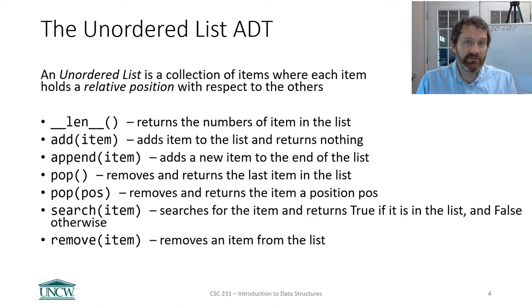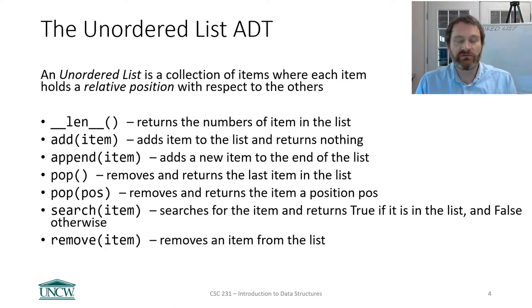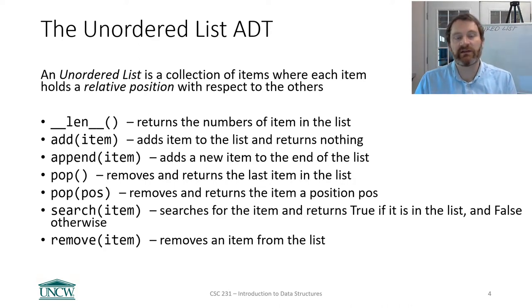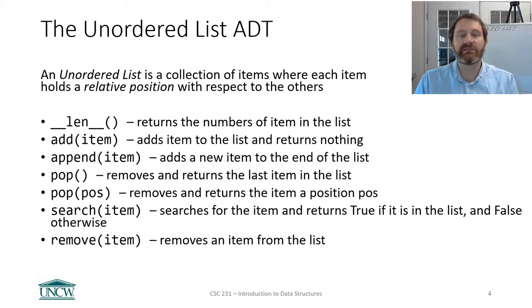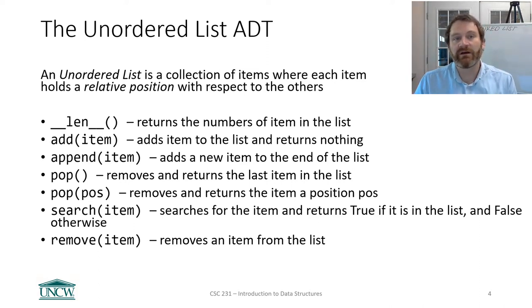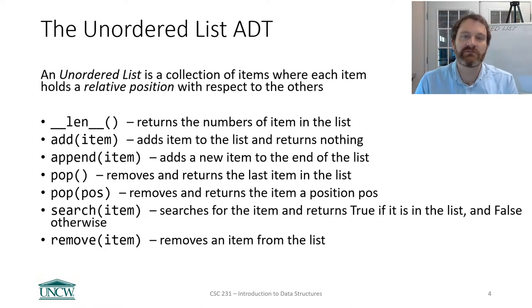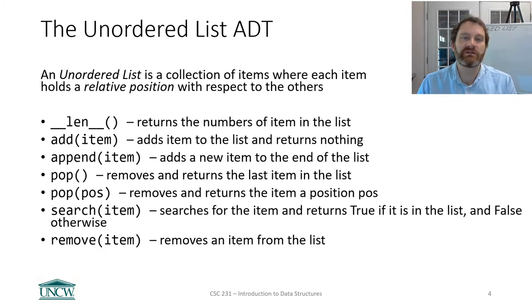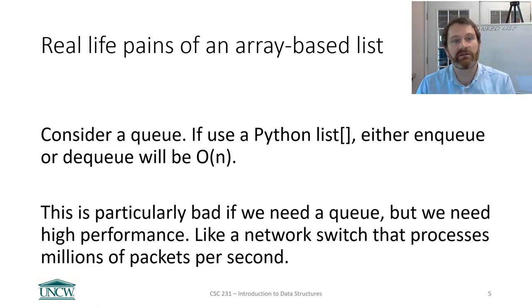When we go to implement a linked list, you're going to write Python code that creates a new list class, and then you will be able to call its length, add items to it (inserting at the front), append items, and pop items. Popping removes from the end, or if you pop given a position, you remove an item at a particular index. You can also search for items by value and remove items by value — all things Python lists do, but you're going to write the code this time.